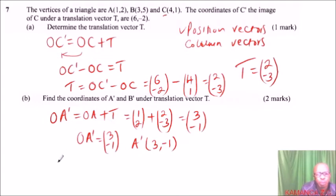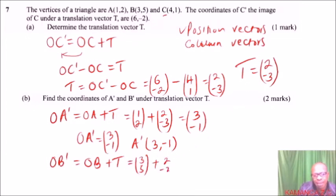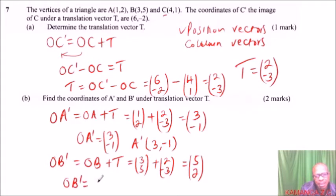We do the same for B. OB prime equals OB plus the translation vector. OB is (3, 5) from the coordinates of B, and we add the translation vector (2, -3). So 3 plus 2 is 5, and 5 plus (-3) gives 2. OB prime is (5, 2), meaning the coordinates of B prime are (5, 2).